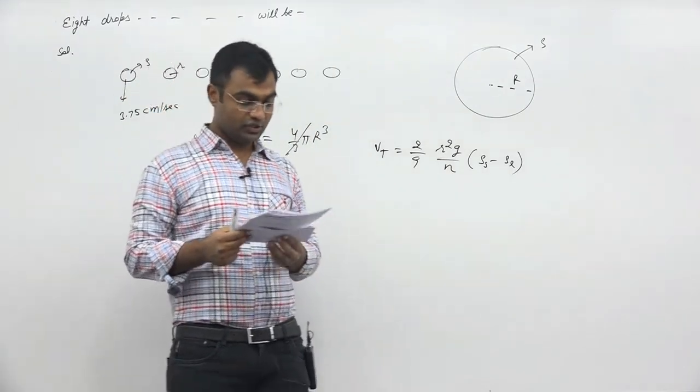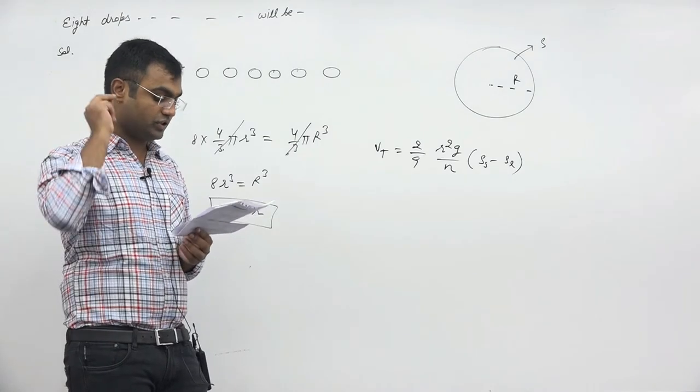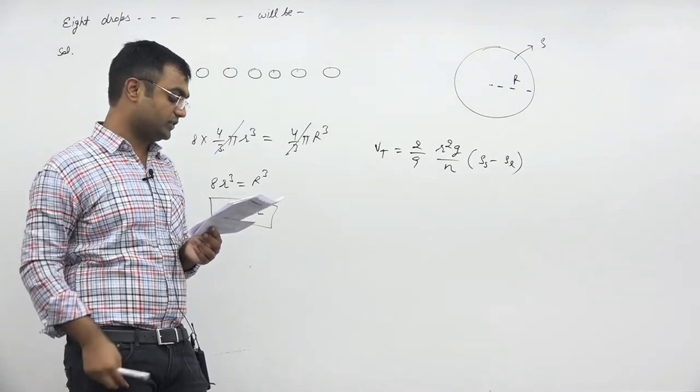Terminal velocity will be equal to 4 times. 4 times 3.75, that will be the answer. That means its speed increases 4 times.